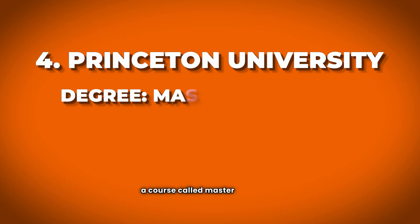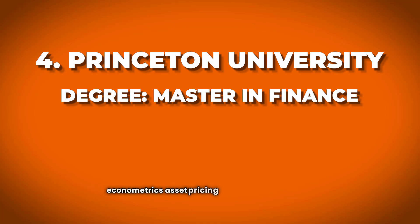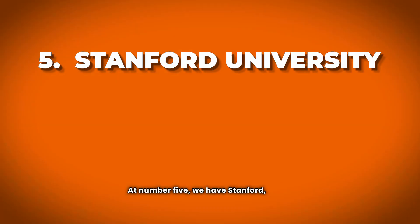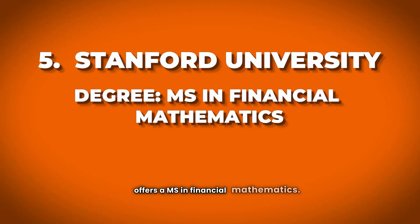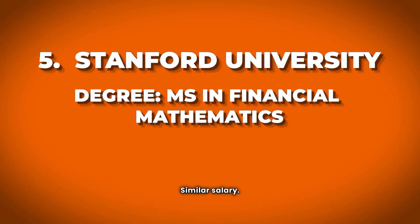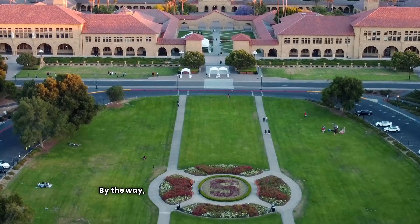Number four is Princeton University with a Master in Finance, focusing on financial theory, econometrics, asset pricing, and risk management, with tuition around $62,000 per year. Number five is Stanford, which offers an MS in Financial Mathematics focused on financial modeling, risk management, and optimization, with tuition around $67,000 per year.